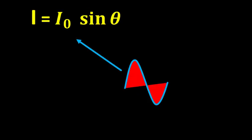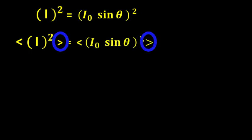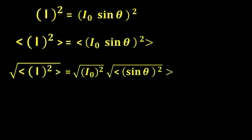Now we apply these steps to the waveform of AC current. First we square the waveform, then we take the average of the resultant, and finally we take the square root to cancel out the effect of squaring in step one.